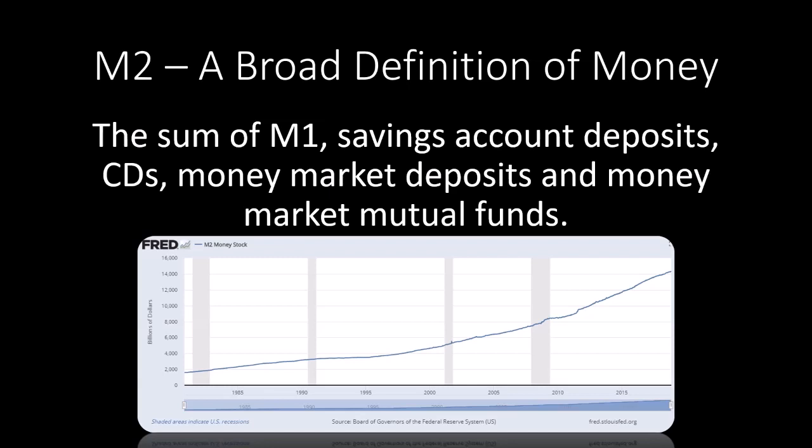M1 is a very liquid definition of money, whereas M2 is a less liquid definition of money.